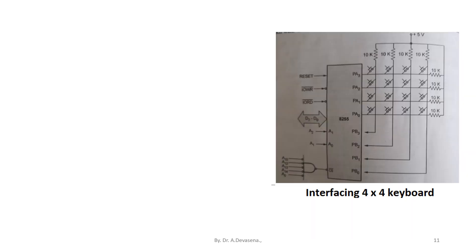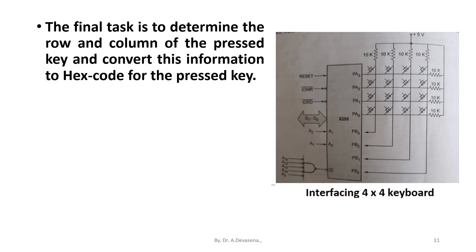The final task is to determine the row and the column of the pressed key and convert this information to hex code for the pressed key. The 4-bit code from input port and the 4-bit code from output port, that is from row and column, are converted to hex code.